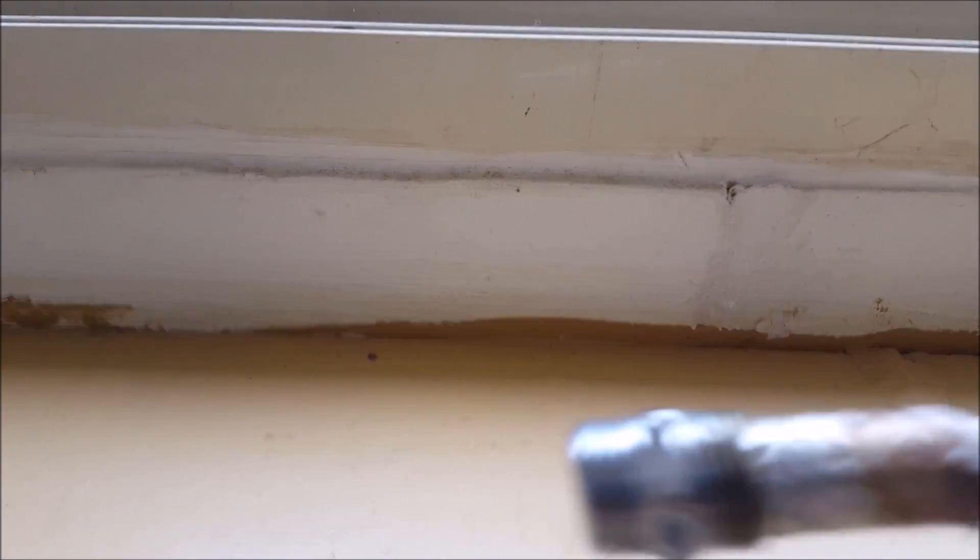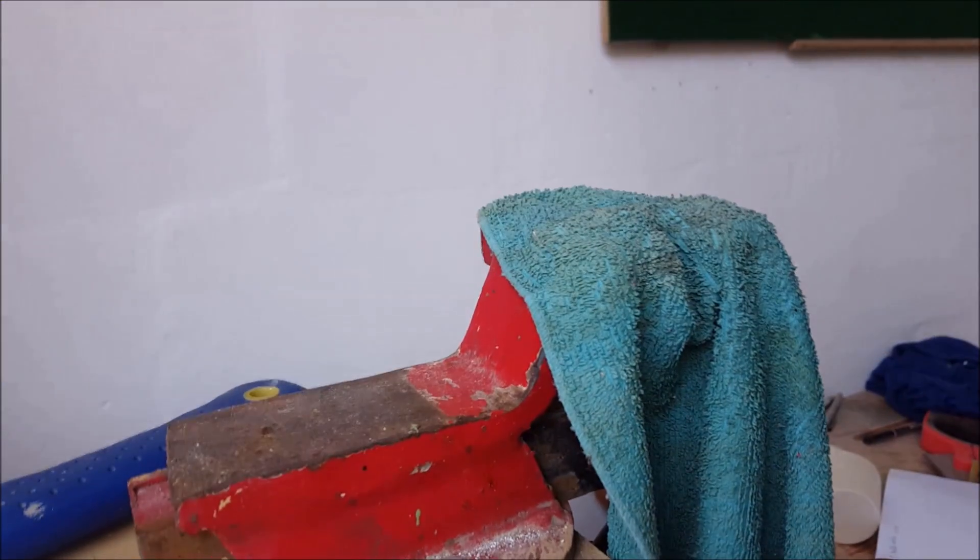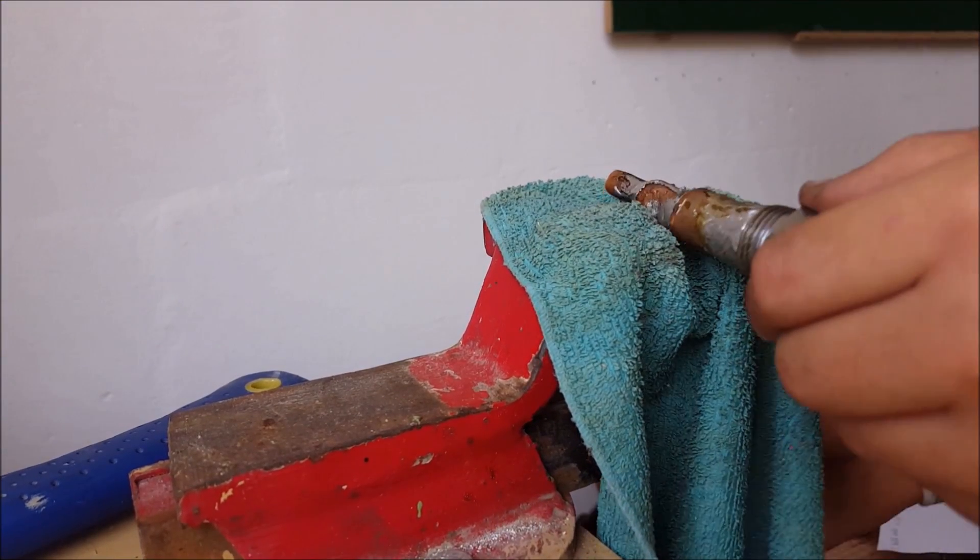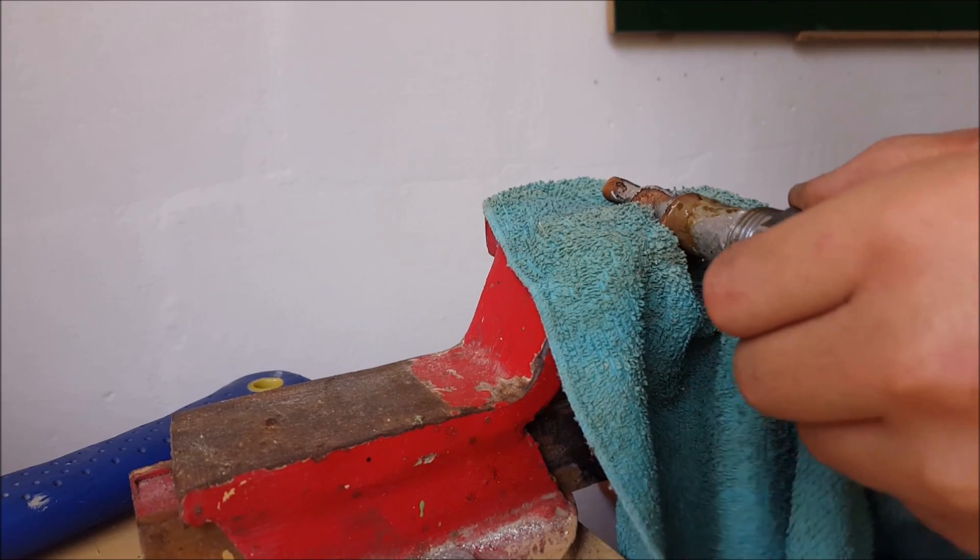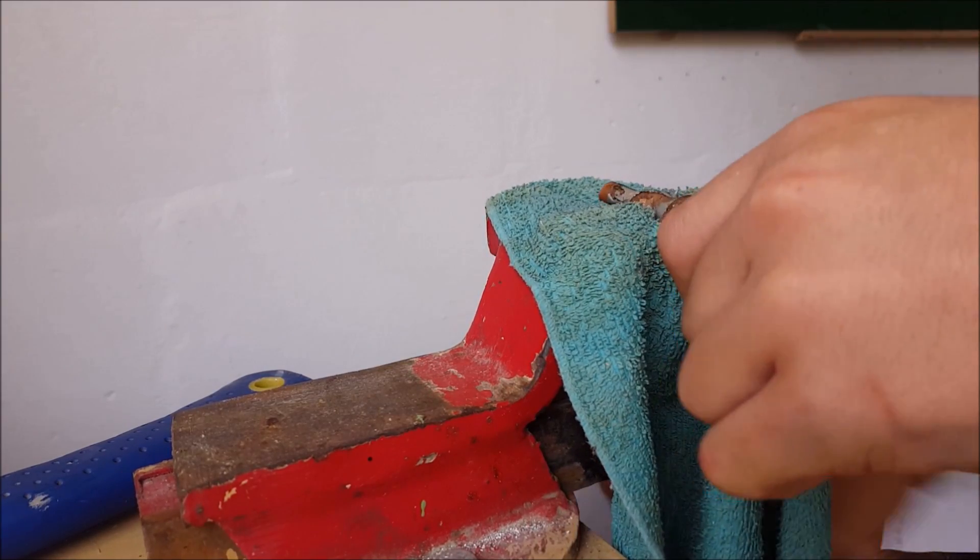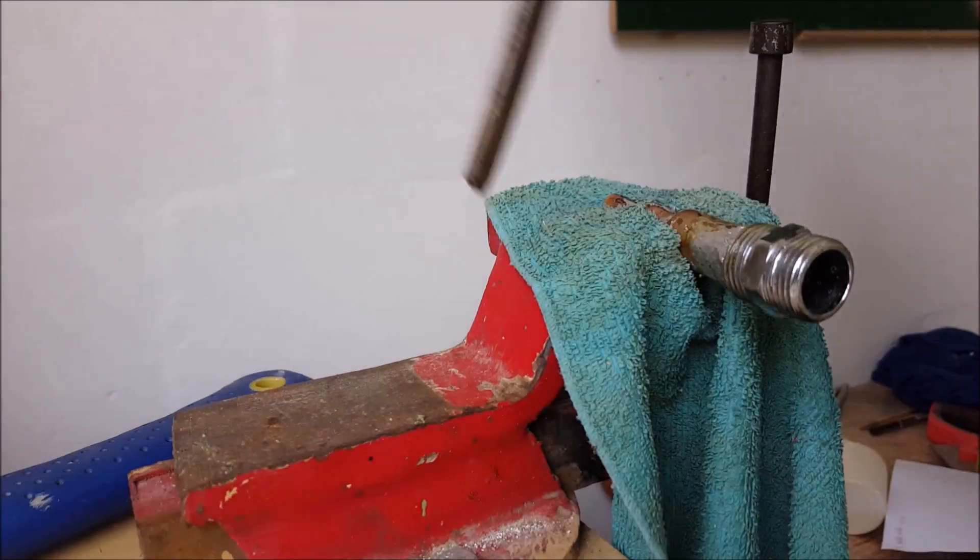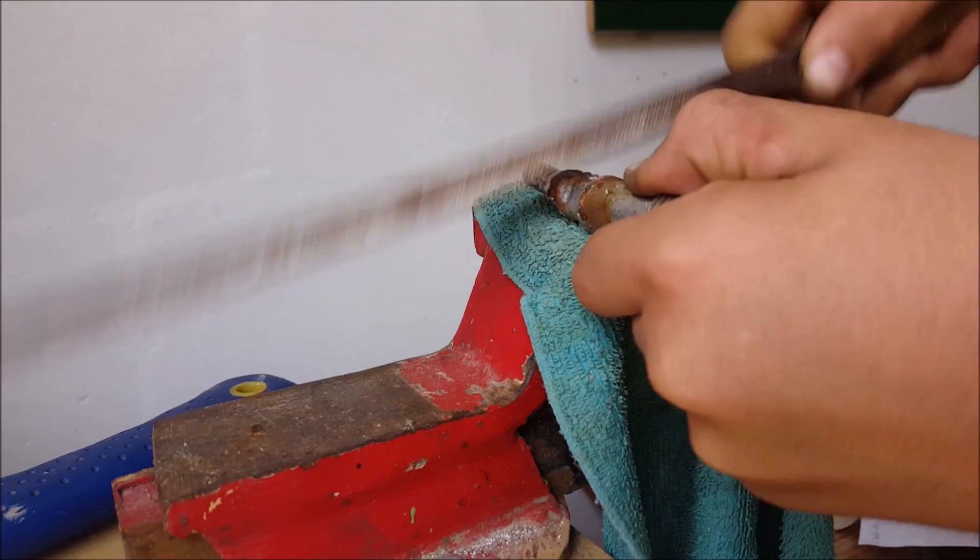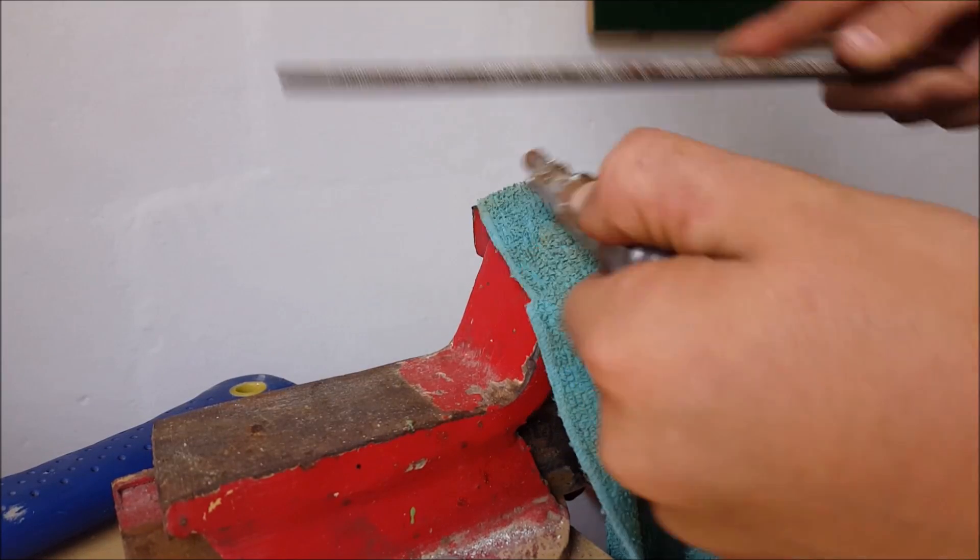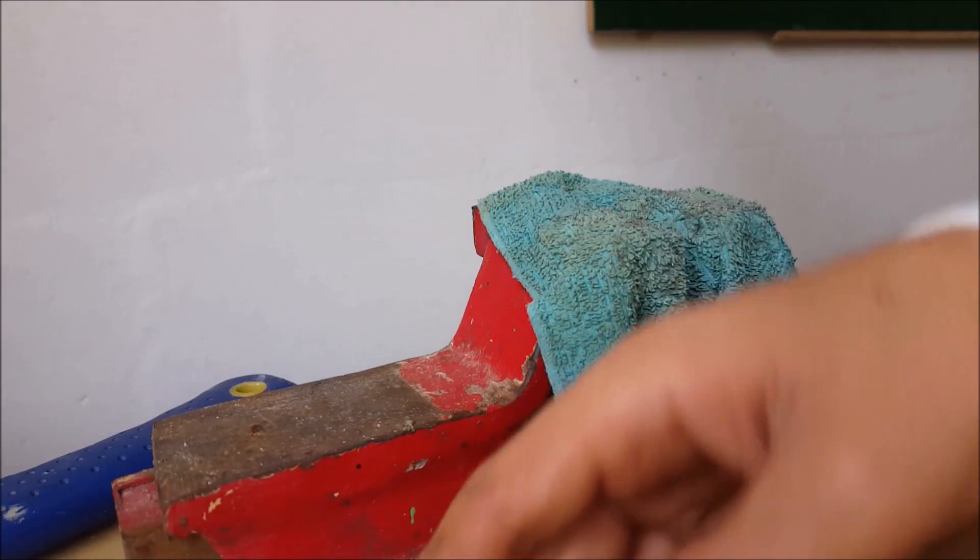So this is the final look of our attachment that we made as this will connect our hose to our air supply tank. So now grab the file and if there are any sharp edges, file them so that they won't puncture the heat shrink tubing.